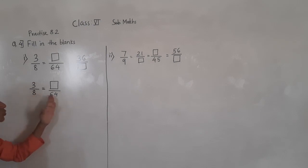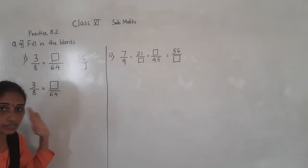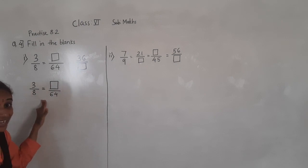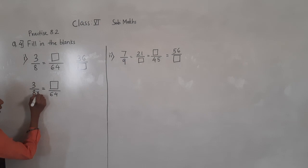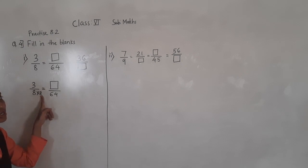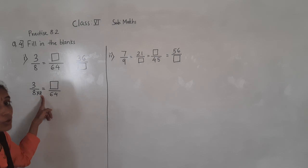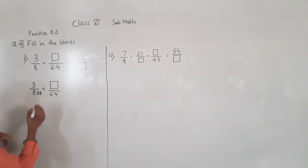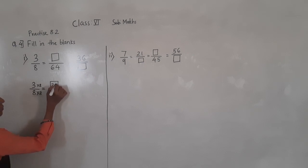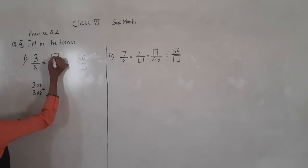So now 64 — see, 8 eights are 64. If you divide 64 by 8, you get 8. So 8 eights are 64. If you multiply by 8 for the denominator, you get 64. Now we are multiplying the denominator by 8, so we have to multiply by 8 for the numerator also. So 3 eights are 24. So what will come in this blank box? 24.